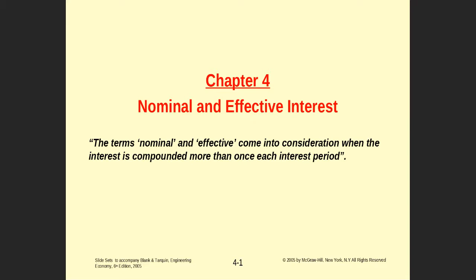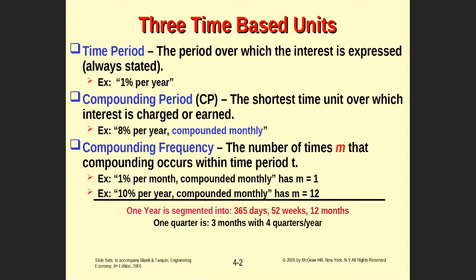So students don't get confused between simple/compound and nominal/effective. Nominal and effective — as you can see from the brief explanation — is the consideration when compounding occurs more than once in an interest period. So it is related to the interest period, not the principal amount as in chapter one. Today we will talk about the three time-based units we need when discussing nominal and effective. Both nominal and effective are based on those three time-based units.